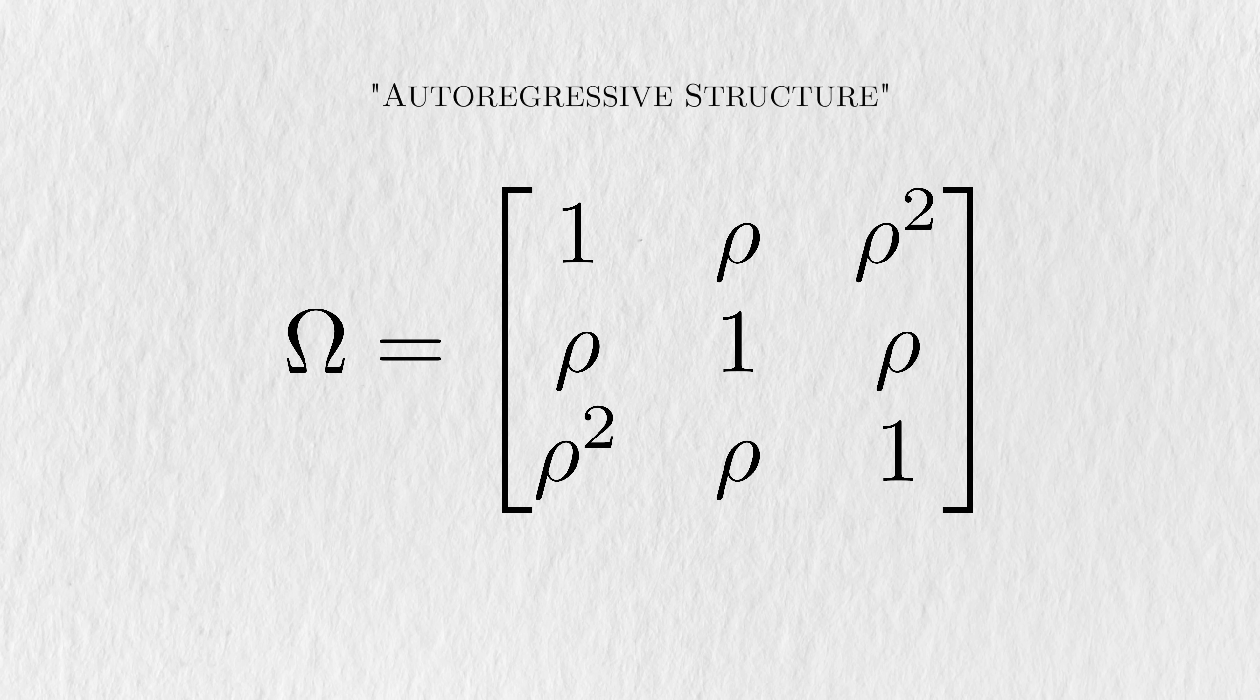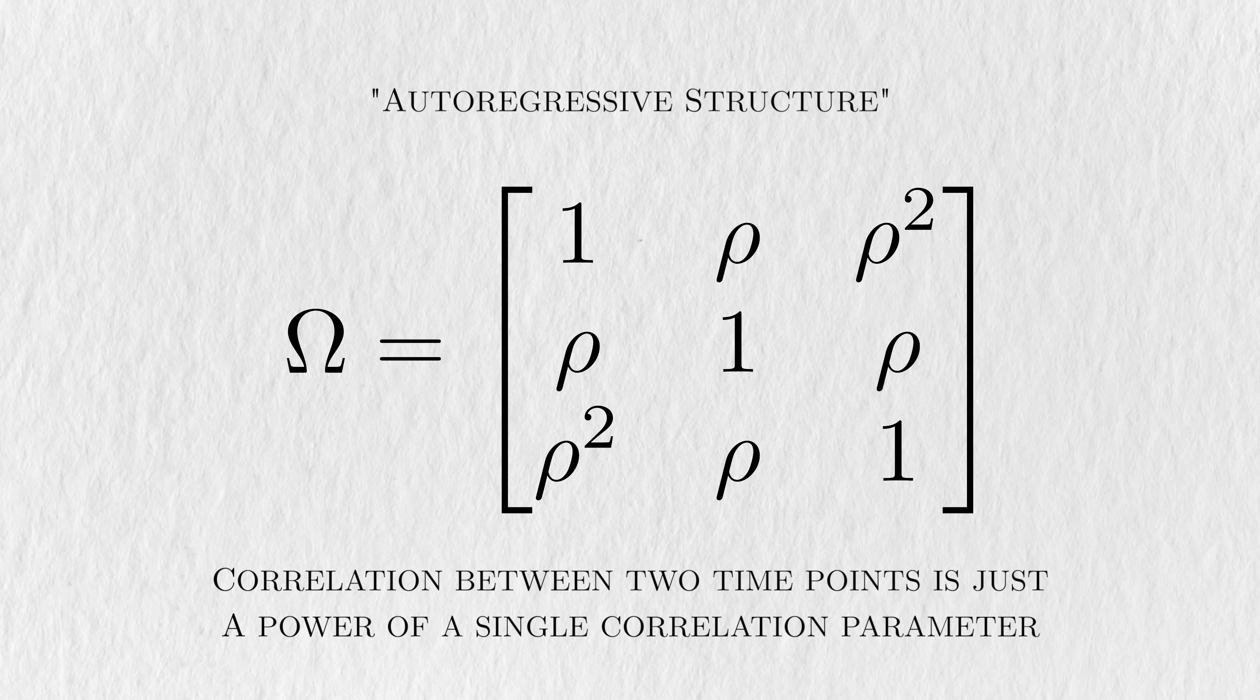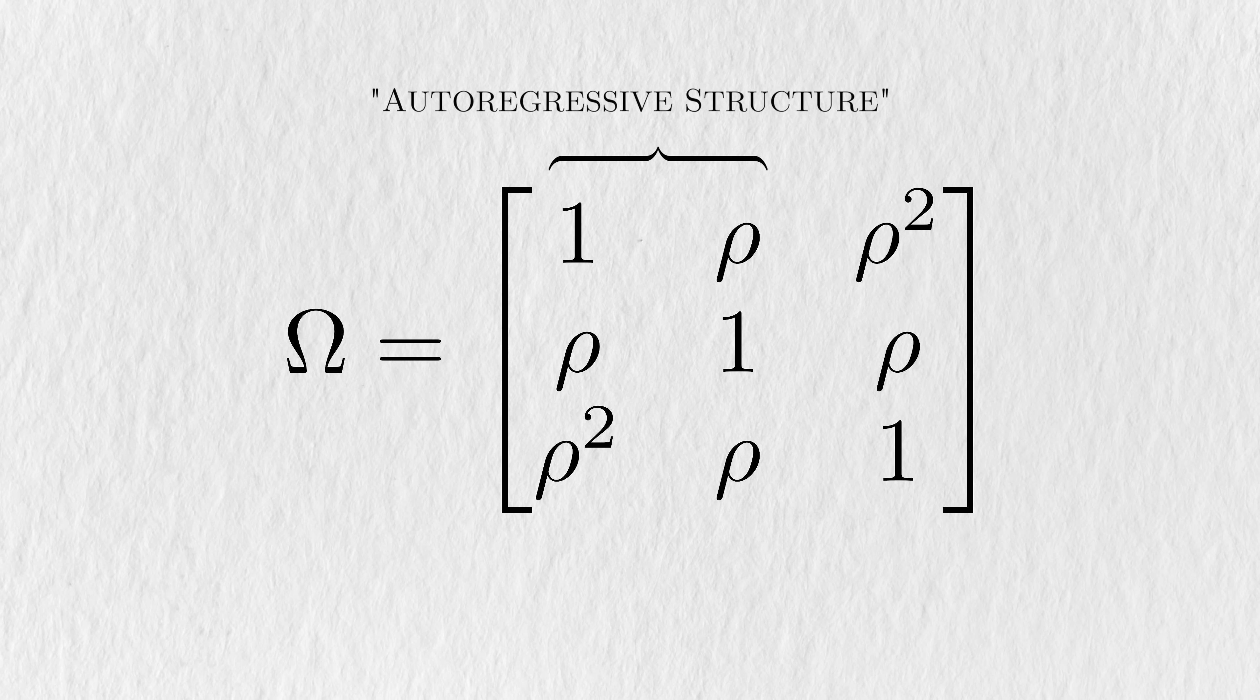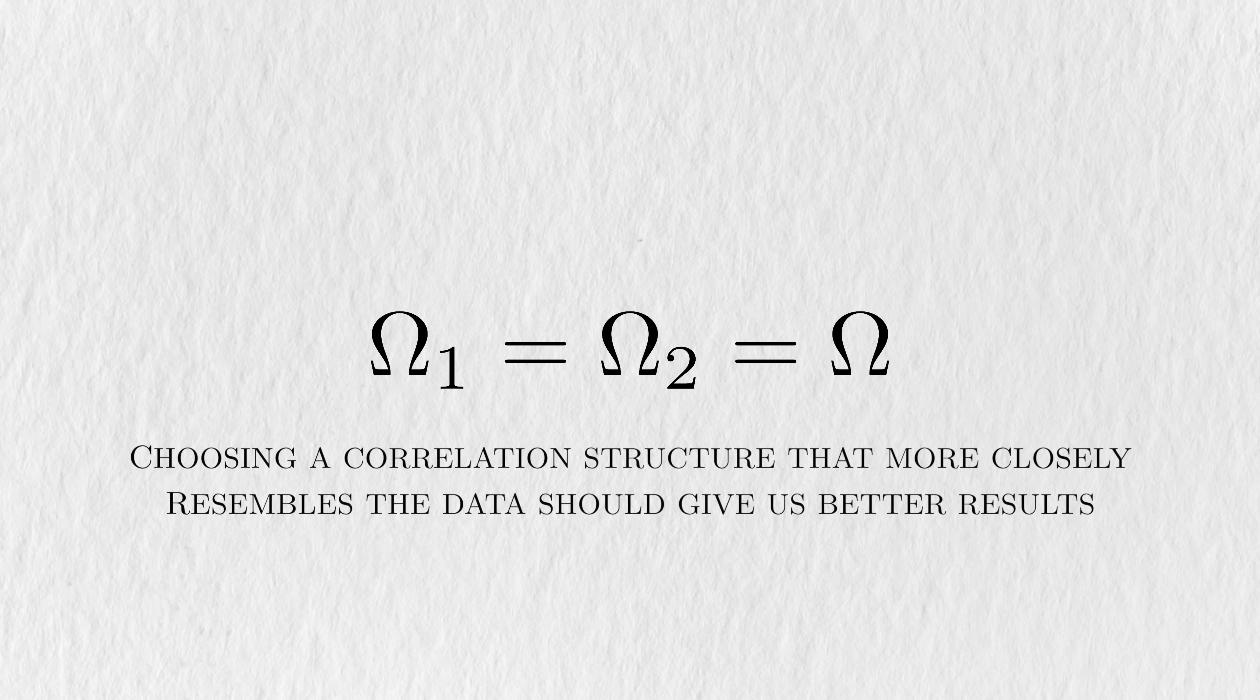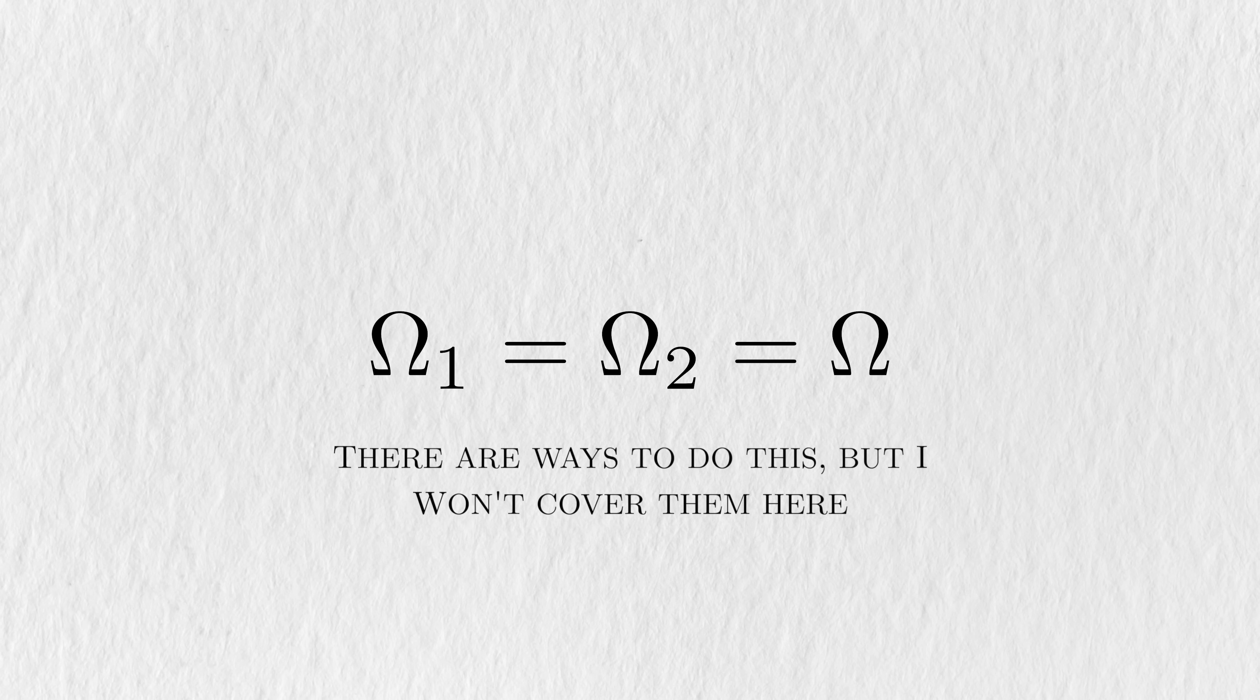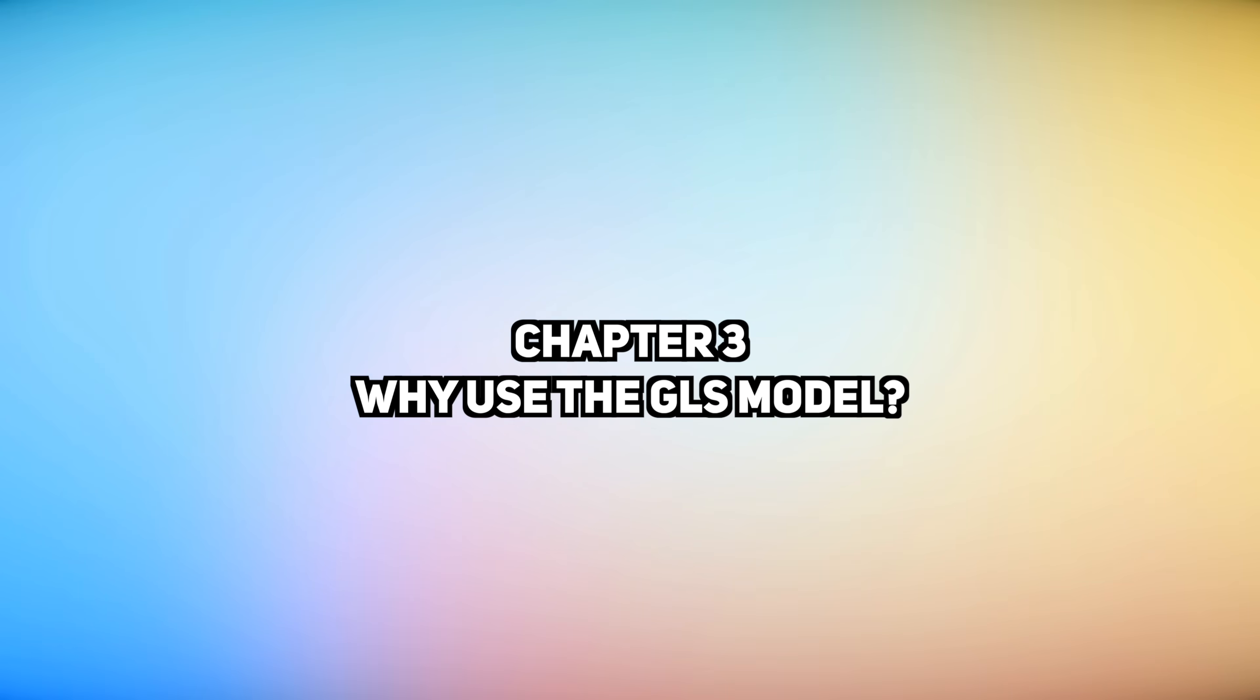For example, we may assume an autoregressive structure, where the correlation between any two time points is just the power of a single correlation. For time points that are one step apart, they have a correlation of just rho, while time points that are two steps apart are rho squared. And so on and so forth. This structure simplifies the number of correlation parameters to just one, but still allows the correlation to change over time. If we're able to pick a correlation structure that better models the data, then we'll get more precise results. We have methods for choosing a correlation structure for our analyses, but I won't go over it here. Now that you know the GLS model, let's use it in a simulated analysis, so you can actually see the benefits of having it in your toolkit.